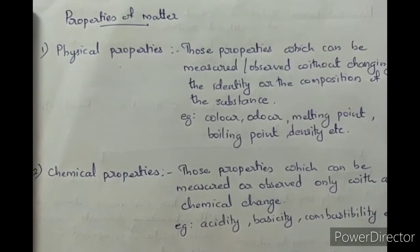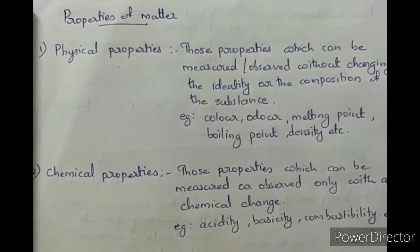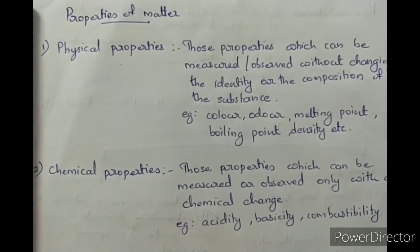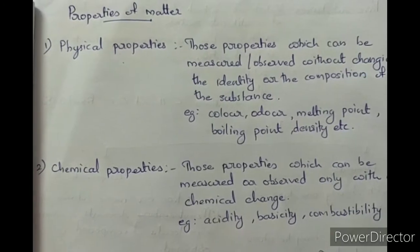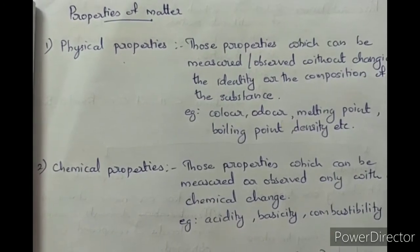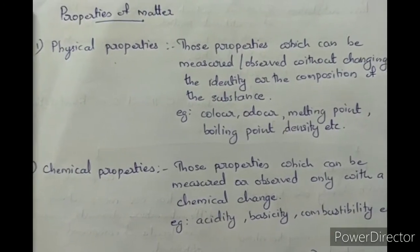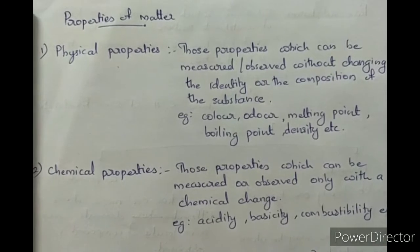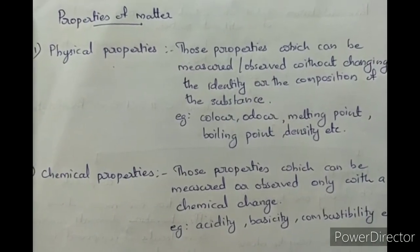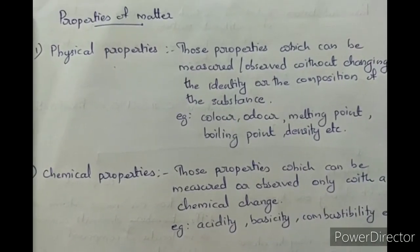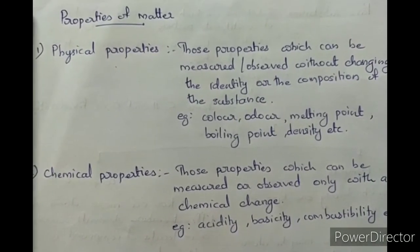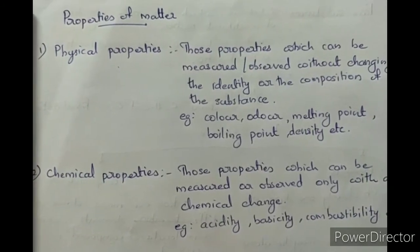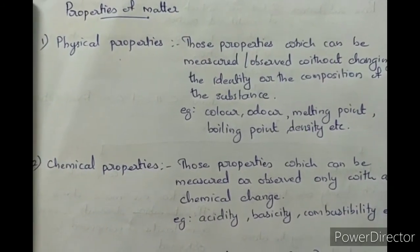Those properties which can be measured or observed without changing the identity or the composition of the substance are called physical properties. Examples are color, odor, melting point, boiling point, density, etc.